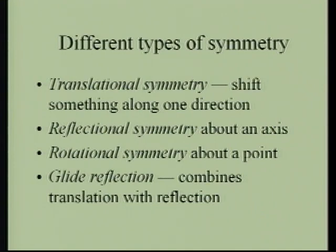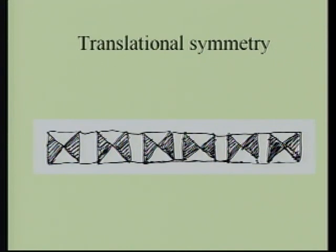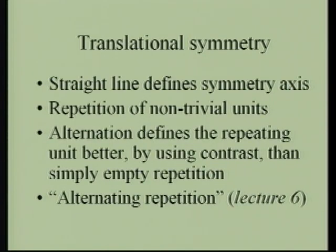So let's leave randomness, because we want symmetry — the opposite of randomness. Translational symmetries represent a shift along one direction, one axis. A reflectional symmetry is something reflected about an axis — a mirror symmetry. Rotational symmetry rotates about a center of rotation. I will also mention glide reflections, a combination of translation with reflection, well known in the anthropological community. Translational symmetry is obtained by the repetition of non-trivial units. Alternation defines the repeating unit better by using contrast than simply empty repetition.